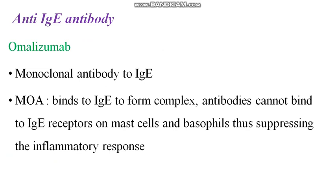Anti-IgE antibodies — an example is Omalizumab. These are monoclonal antibodies to IgE. They bind to IgE to form a complex, and due to the presence of this complex, antibodies cannot bind to IgE receptors on mast cells and basophils, thereby suppressing the inflammatory response.